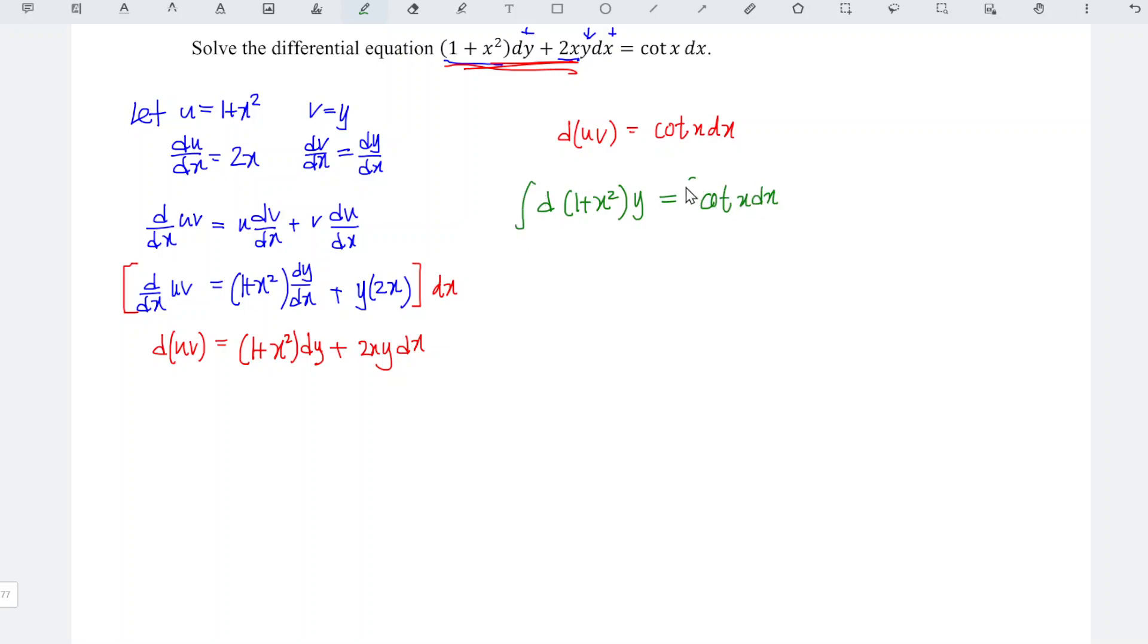Now we should integrate both sides. Integrate, differentiate, cancel each other. So left hand side we have 1 plus x square times y. And for the right hand side we know that cotangent is actually cos x over sin x dx. This is equal to, when we differentiate the denominator part sin x we should obtain cos x, so this is simply ln sin x and remember to add the constant c.